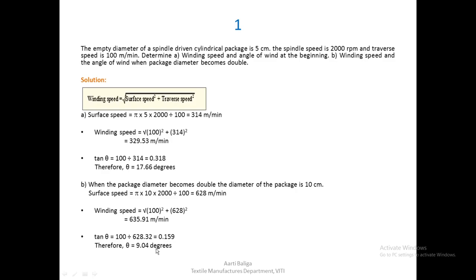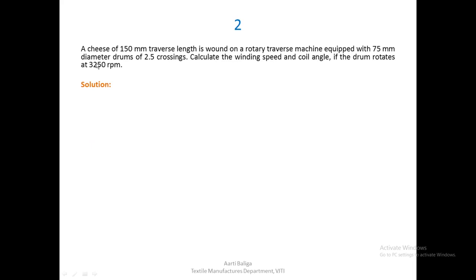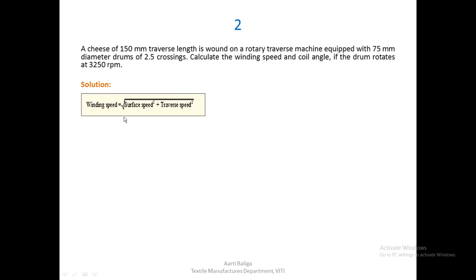Coming to the next problem: a cheese of 150 mm traverse length is wound on a rotary traverse machine equipped with 75 mm diameter drums of 2.5 crossings. We are asked to calculate the winding speed and the coil angle if the drum rotates at 3250 rpm. The first thing to calculate is the winding speed using the same formula.